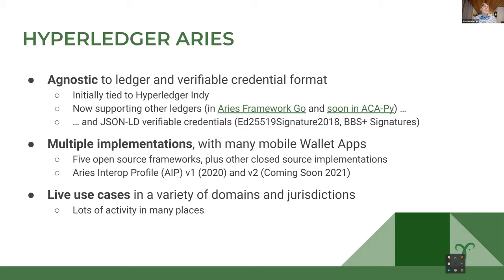There are five open source frameworks on which to build deployments and agents, and numerous closed source implementations such as Evernym's in the community. Many mobile wallet apps — you can go into the App Store and find five or six now based on ARIES. ARIES Interop Profile, or AIP, is how we align getting multiple implementations done by entirely separate organizations so that we have interoperability.